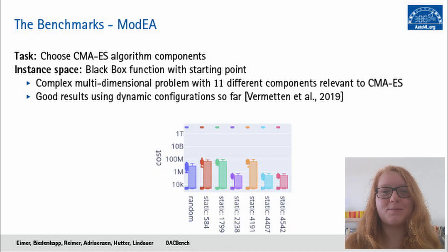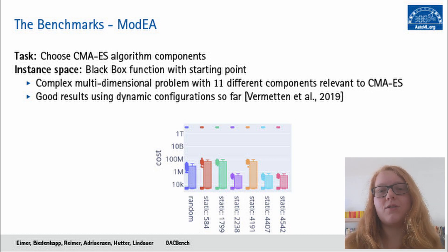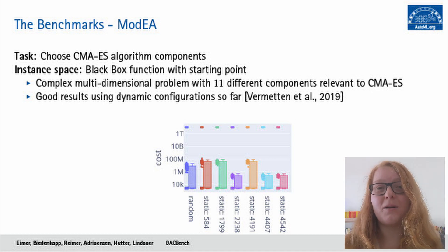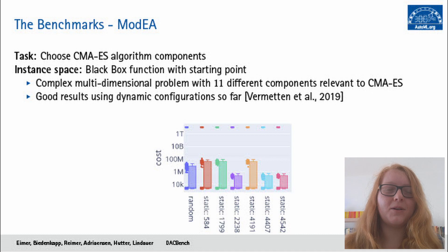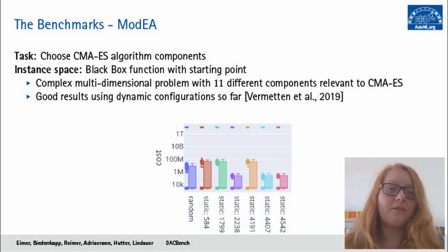The same goes for our second CMA-ES benchmark, which is MODEA. Here we don't only choose a learning rate — we actually choose the algorithm components of CMA-ES on black box functions again. That means we have 11 different components, each of which can be turned on or off or have a few choices, adding up to over 4000 different combinations of CMA-ES. Previous work has shown that dynamic configuration here can be beneficial, although in a more limited capacity and not adapting at every step, because this is a very hard problem with such a large and complicated search space. The dynamic random policy performs quite a bit worse here compared to the step size adaptation benchmark, and we don't really have a dynamic baseline so far — so this is really an open problem at this point.